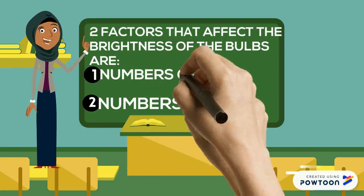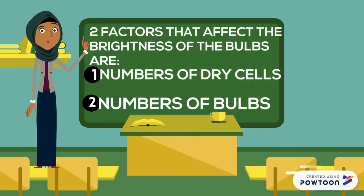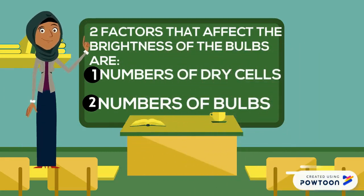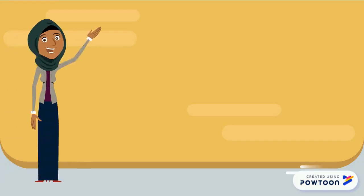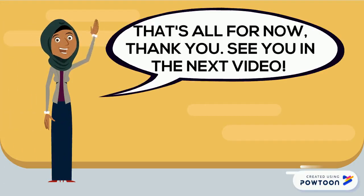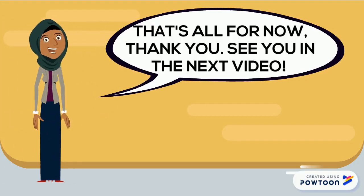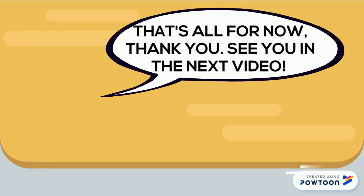So these are the two factors that affect the brightness of the bulbs that we have learnt today: the number of dry cells and the number of bulbs. That's all for now. Thank you everyone. See you in the next video. Bye.